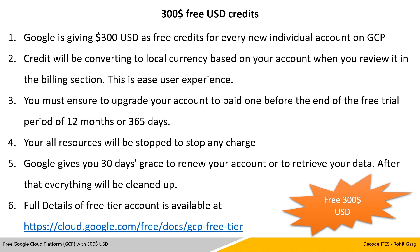$300 free USD credit is the second feature of the Google Cloud Platform free tier account. Google gives $300 as free credit for each new individual account created on GCP. The credit will be converted to local currency based on your profile when you review the billing section, which is to ease the user experience. You must ensure to upgrade your free tier account to a paid one before the end of the free trial period of 12 months. Once your free trial period is completed, Google will stop all resources in your free tier account, give you a 30-day grace period to renew or access your data, after which everything will be deleted.